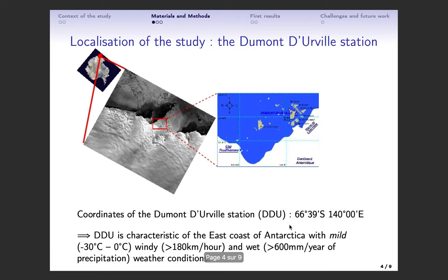This work focuses on the Dumont d'Urville station, where we get a lot of observations and continuous measurements thanks to a well-established human attendance. This is possible because there is less extreme climate on the east coast where DDU stands, just next to the ocean where lows are crossing gradually.